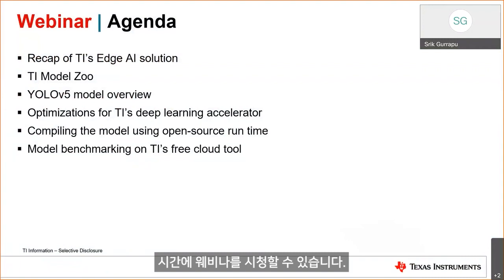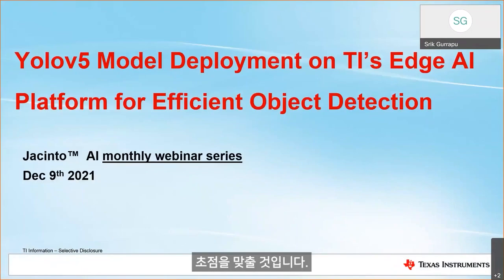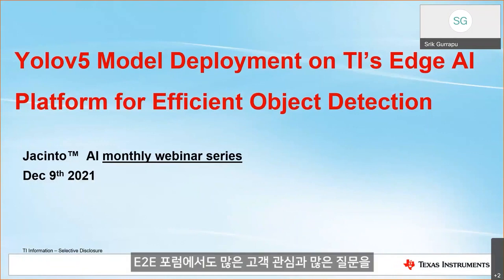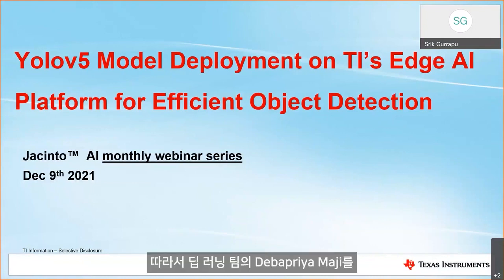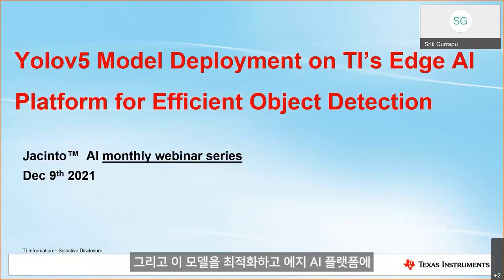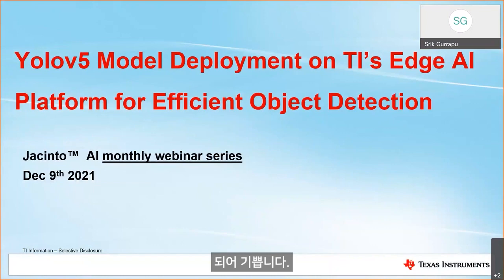Today we will be focusing on our popular object detection model, YOLO v5. We see quite a bit of customer interest and a lot of questions on our E2E forums as well, so we are excited to have Deba Priya Maji from our deep learning team to dig deeper into understanding what the YOLO v5 model is, how we go about optimizing it, and deploying it onto the HJI platform.